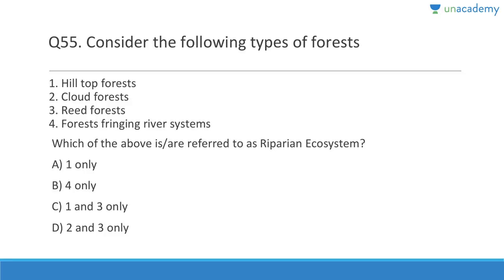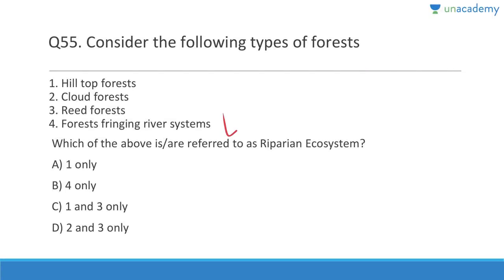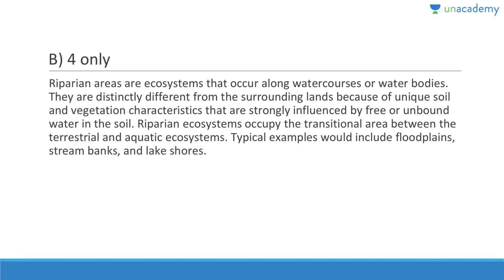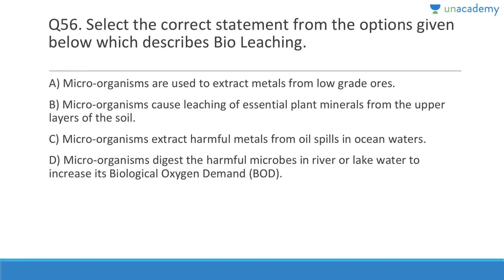Question 55: Which of the following forest types are referred to as riparian ecosystems — hilltop forest, cloud forest, reed forest, forest fringing river systems? Answer is option 4. Riparian areas are ecosystems that occur along water courses or water bodies. The only one that fits is forests fringing river systems. They are distinctly different from surrounding lands because of unique soil and vegetation characteristics strongly influenced by free or unbound water in the soil.